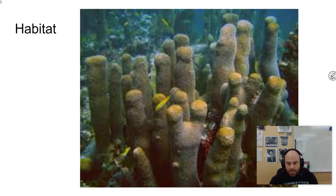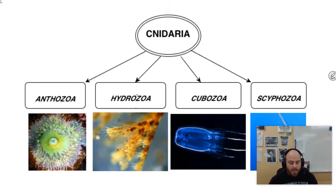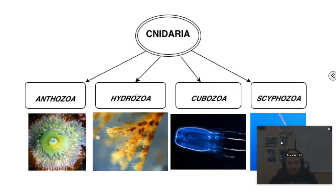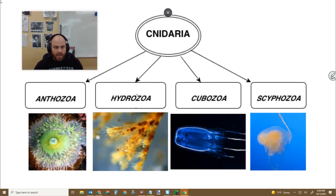Some cnidarians are reef-building, meaning they actually build structures — like corals — and they can provide habitat for lots of other species. There are four classes of cnidarians. There's Anthozoa, the largest class, which includes anemones and corals and tends to be a sessile group. Then there's Hydrozoa, one of the most variable classes with a lot of different types. Cubozoa are cube jellies, named for the square shape of their body. And Scyphozoa are what we would think of as true jellies — what we typically picture when we think of a jellyfish.